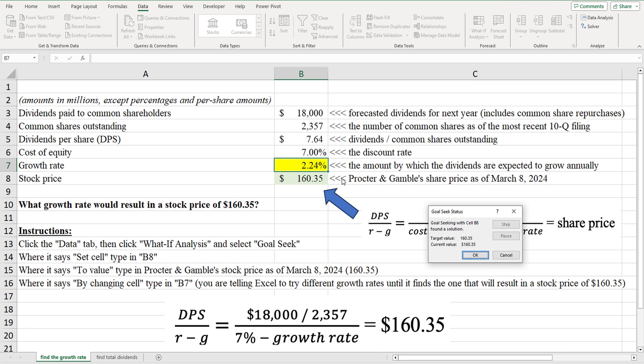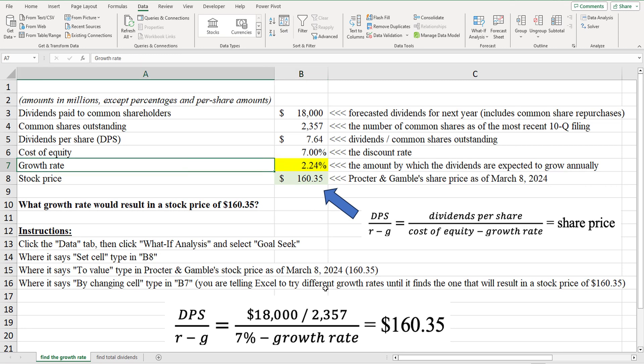So we see that our G or growth rate is 2.24%. So again, what is that saying? That's saying, look, assuming dividends per share of $7.64, assuming a cost of equity is 7%, the growth rate or G, right?